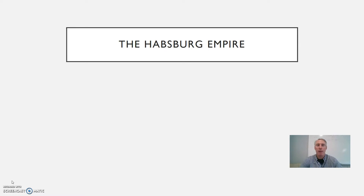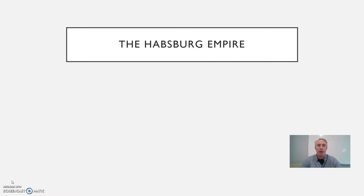First let's talk about the failed attempt to revive imperial authority within the Holy Roman Empire, and for that we have to talk about the Habsburgs. The Habsburgs were a very powerful German family that accumulated a vast amount of power throughout all of Europe. They did this through conquests and marriage alliances. I'll show you a map in a little bit of all the areas they controlled.